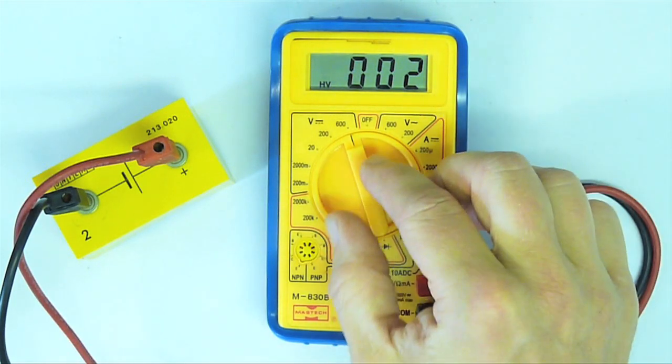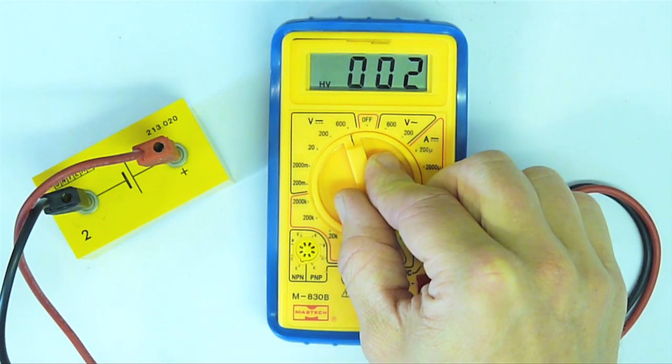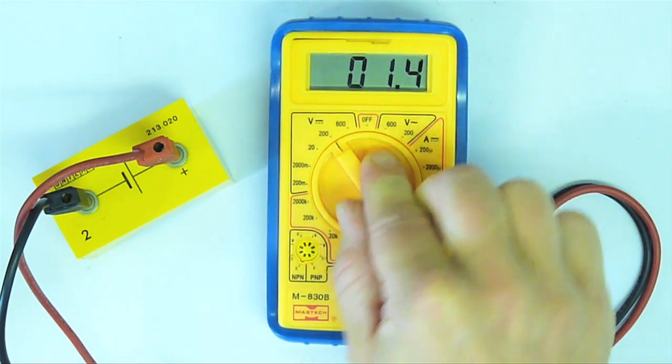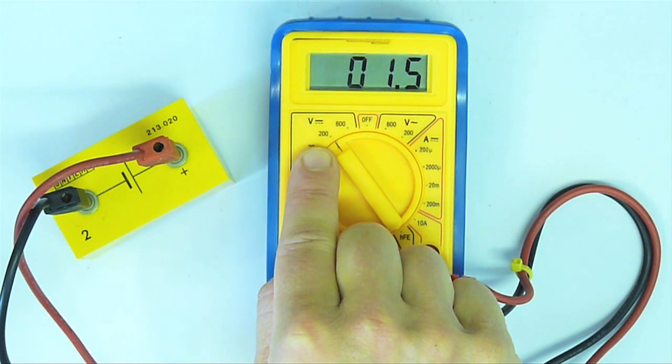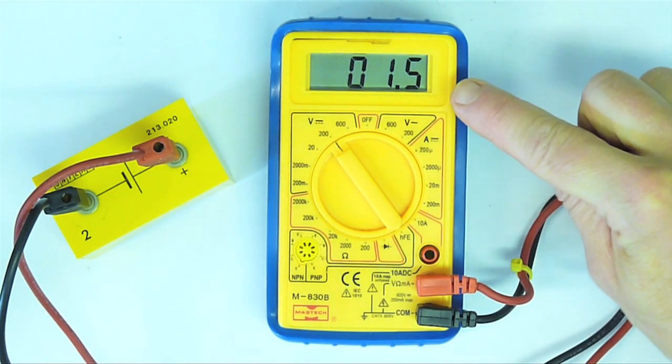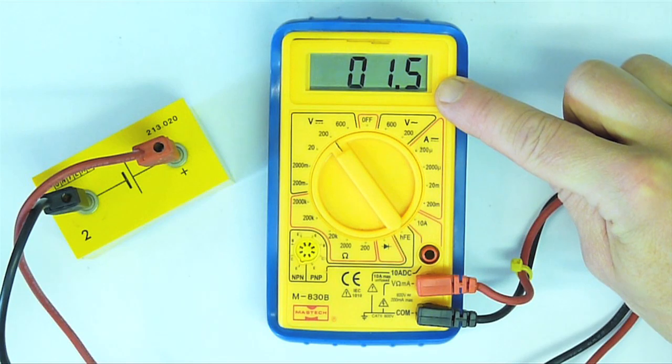I move down to the next range lower, marked 200 volts full scale deflection. You can see that my reading is now 1.5 volts. That's two significant figures.